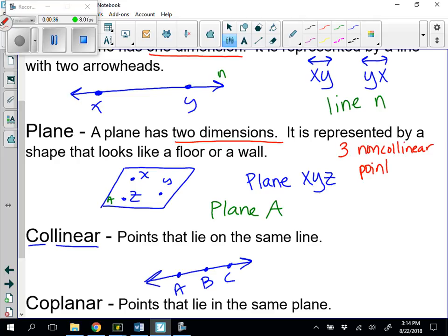Three non-collinear points always determine one plane. Always determine one plane. And sometimes that's important because you almost have to trust it. And sometimes you can't really see that. So I will point us back to that definition quite a bit.